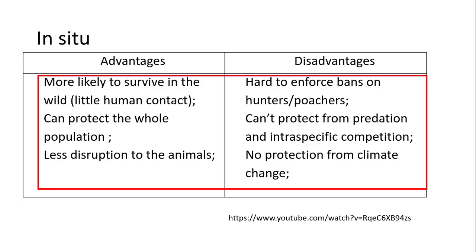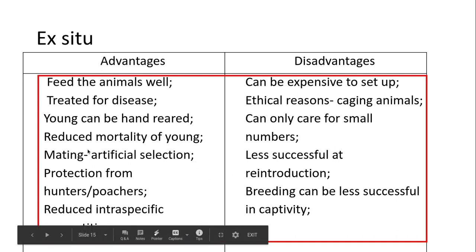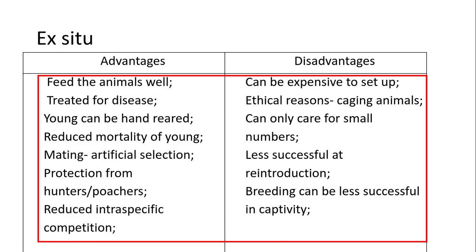You can pause and have a go at ex-situ advantages and disadvantages, as they are fairly similar but opposite. The answers are taken directly from the mark scheme in a red box — it's worth pausing to read through. One key point is mating through artificial selection, which is useful for zoos: you can help maintain genetic diversity within a population by selecting animals to breed together and bringing in new mates if necessary.